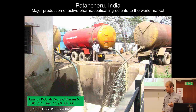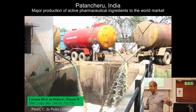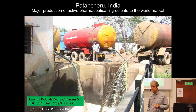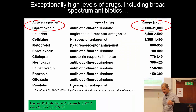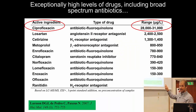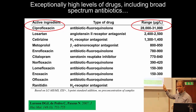In normal sewage treatment plants, you find nanograms per liter of drugs. But the concentrations we found here were thousands of micrograms — milligrams. For some of these, it's a million times higher than what you normally find in a sewage treatment plant.